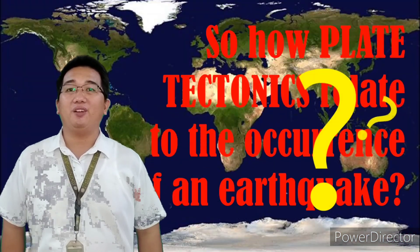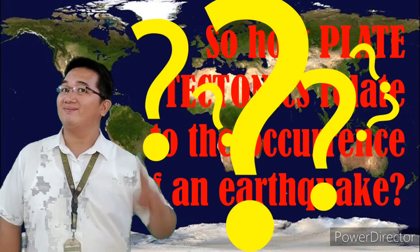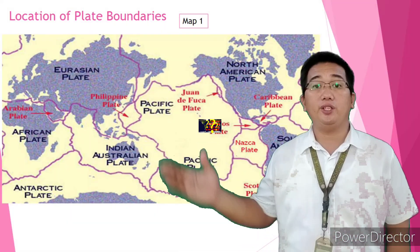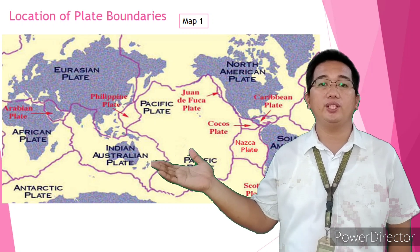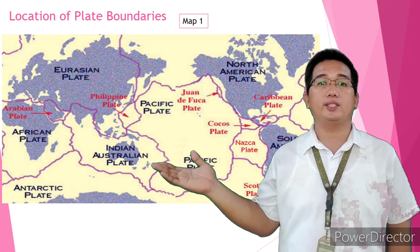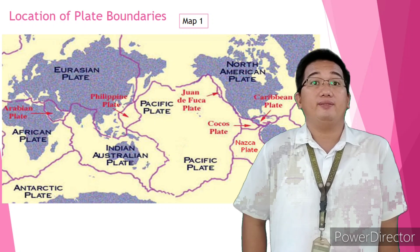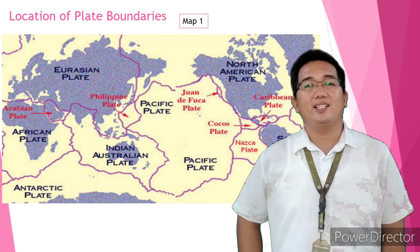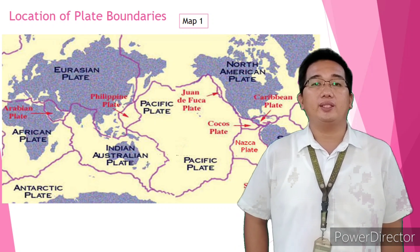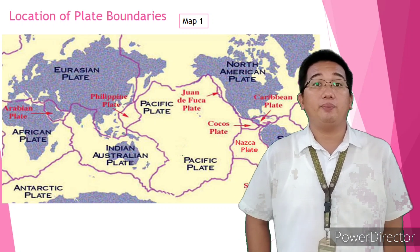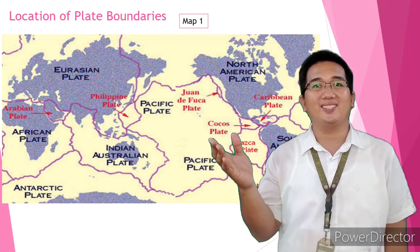So, how does plate tectonics affect the occurrence of an earthquake? I have here a map, and this map shows the location of the plate boundaries. Have you noticed that there's a purple line? That purple line indicates or represents the lithospheric plate boundaries. Again, what are plate boundaries?